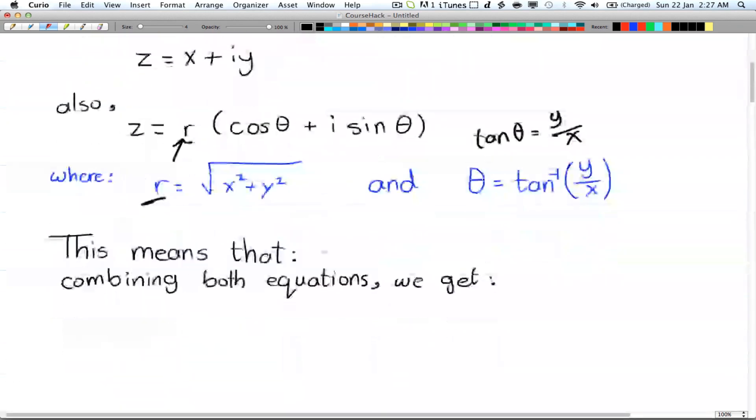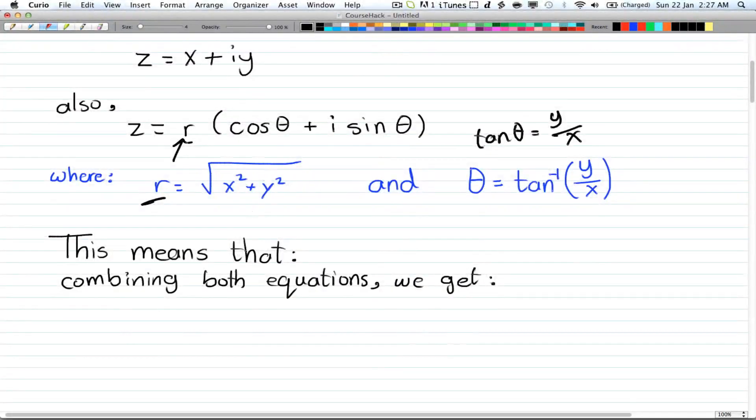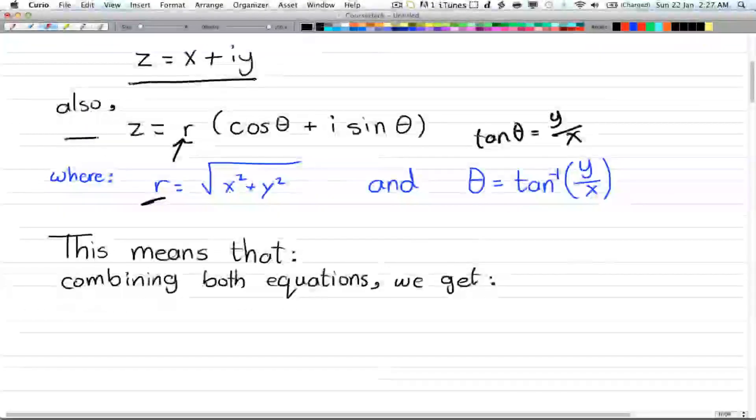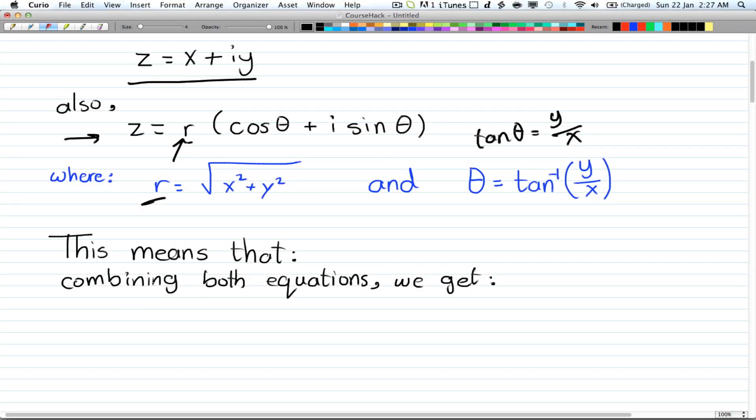So what does this mean? We can combine this formula and that formula to get that x + iy = r(cos θ + i sin θ). But why do we use this?